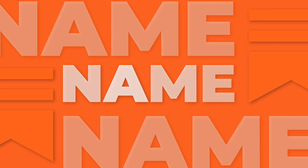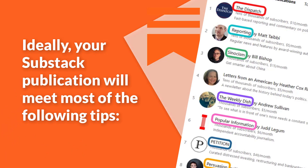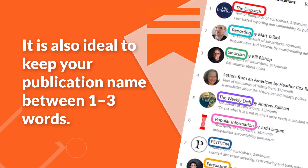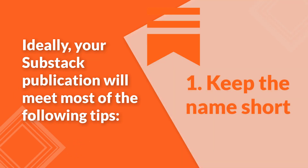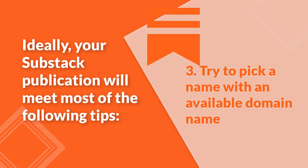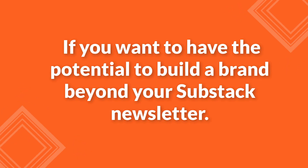Number 1: Name. Picking a good name is essential to creating a successful Substack newsletter. Ideally, your Substack publication will meet most of the following tips. First, keep the name short — generally, the shorter the name the better, ideally between one to three words. Second, keep the name simple so it will be easy for your audience to remember. Third, try to pick a name with an available domain name — this is optional, but useful if you want to build a brand beyond your Substack newsletter.